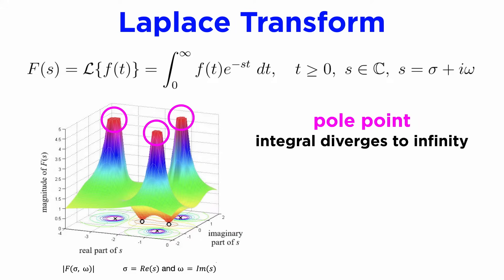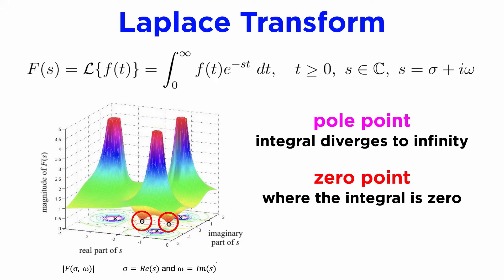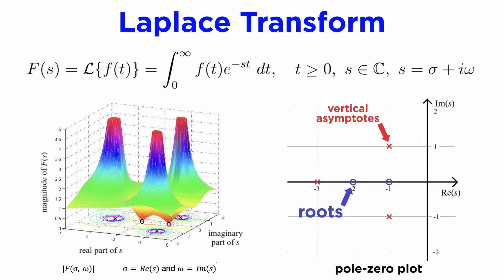Values of s for which the improper integral diverges to infinity are known as pole points, while the values of s for which the integral is zero is a zero point. Often we are only interested in where these pole and zero points lie, and the rest of the function is irrelevant, so we mark zero points with circles and pole points with x's, and this plot in the s domain is the pole zero plot for the function.